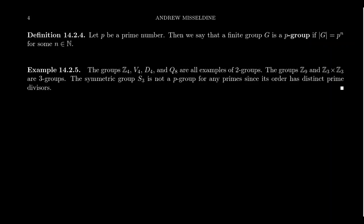Some examples of two groups would be Z4, the Klein 4 group, D4, Q8. The cyclic group of order four has order four. The Klein 4 group is also a group of order four. These are examples of abelian two groups because their orders are two to a power. D4 is a non-abelian group of order eight. The quaternion group is also a non-abelian group of order eight. Examples of three groups would be things like Z9 and Z3 cross Z3, the elementary abelian group of order nine.